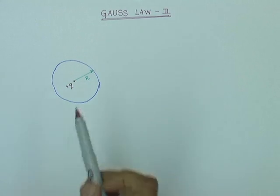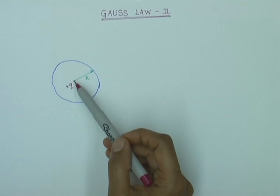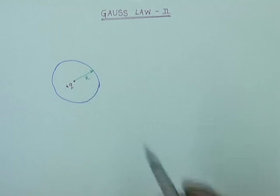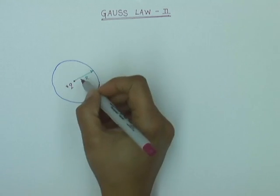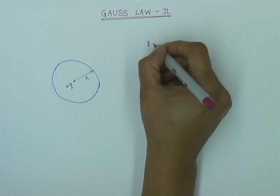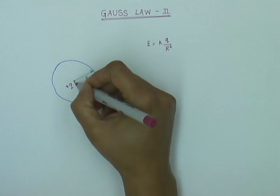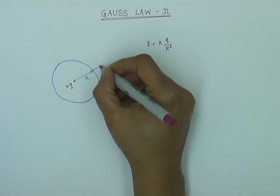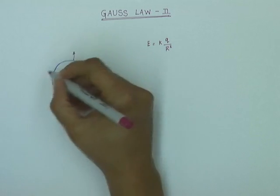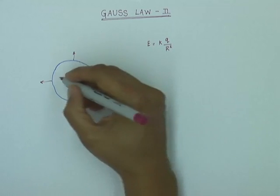Let us begin with the simplest surface. We have a sphere — remember this is a 3D sphere, not a circle — and there is a charge q placed at the center of the sphere, and the radius of the sphere is r. The electric field due to charge q is uniform, and the electric field at the surface of the sphere is given by kq over r squared. The electric field lines act out radially at every point on the sphere.